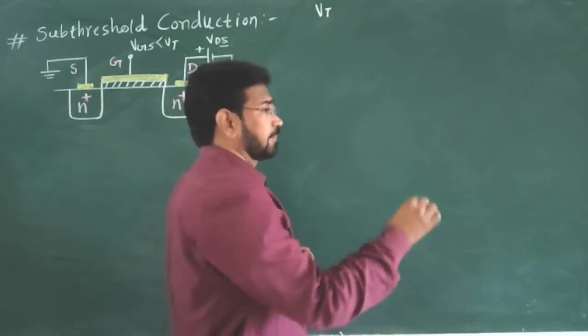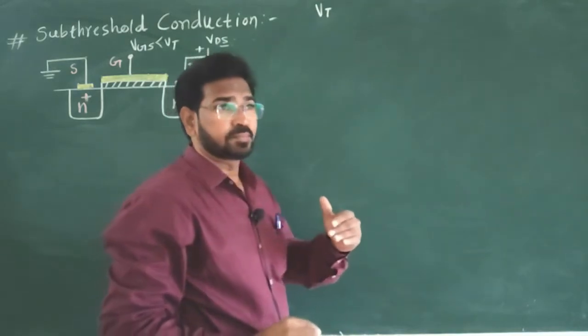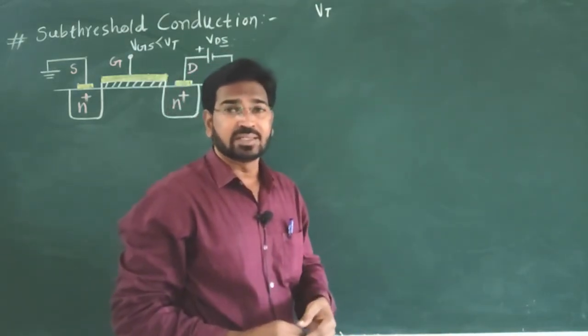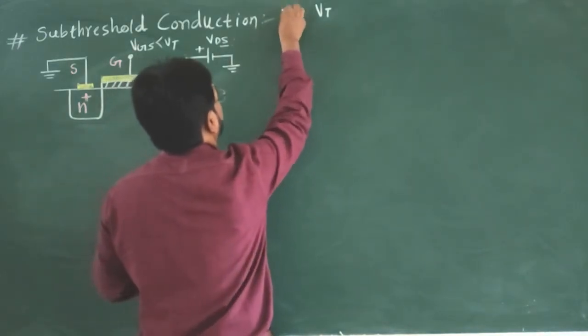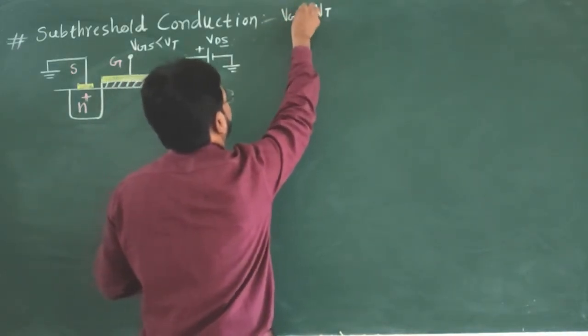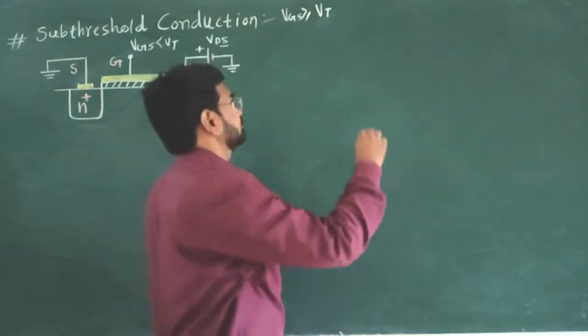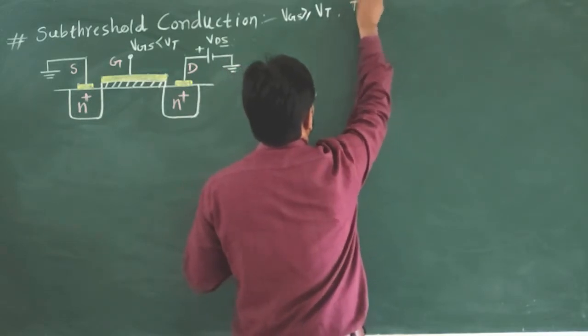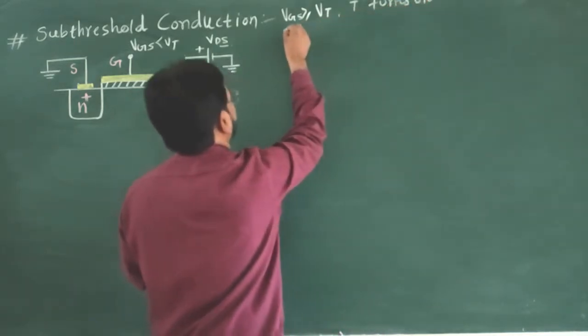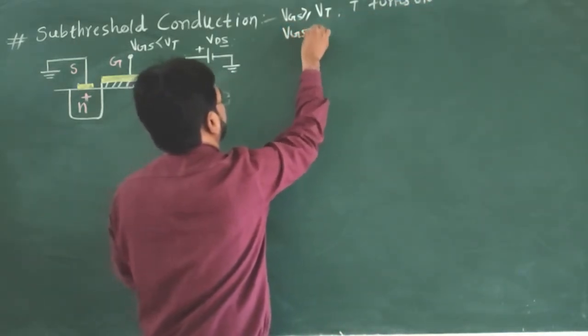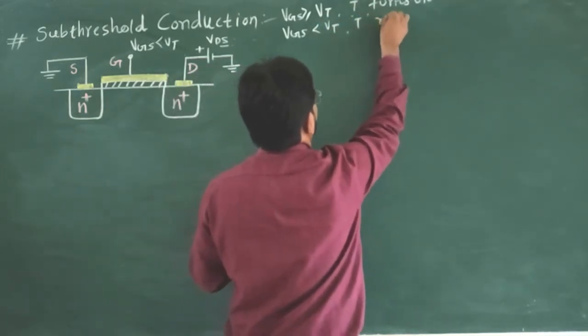It is the voltage on gate at which the transistor turns on or simply in terms of equation we can say when Vgs is greater than or equal to Vt the transistor turns on. The transistor turns on and when Vgs is less than Vt the transistor remains off.